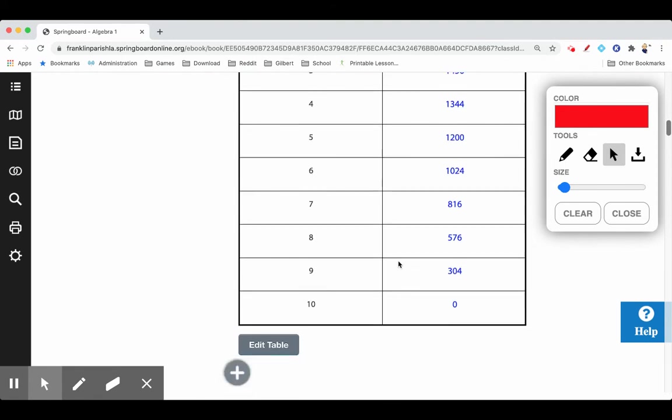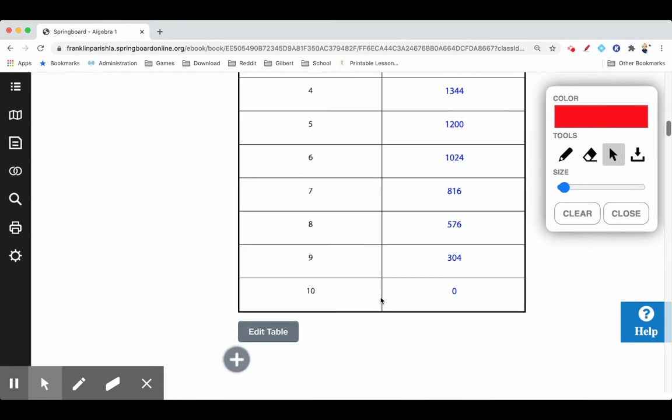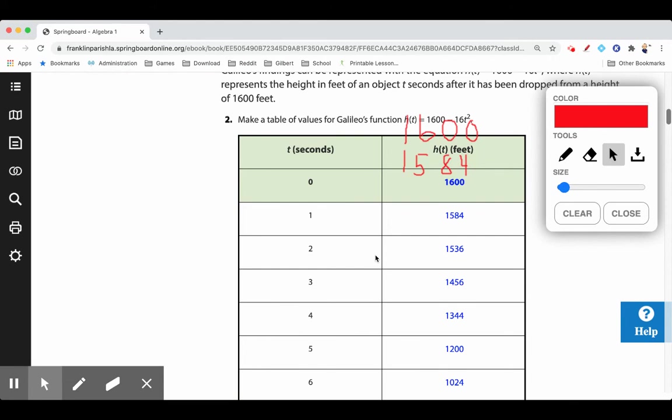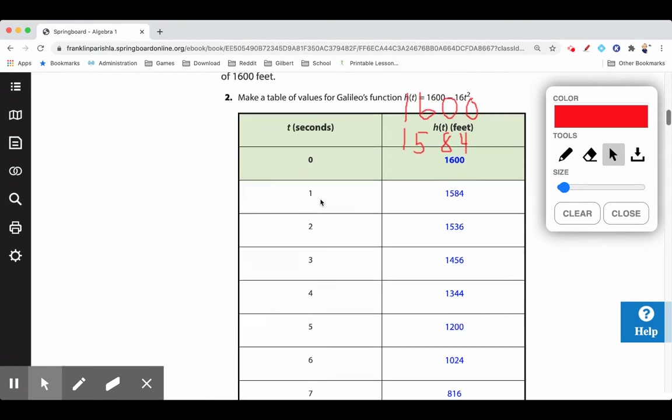So why do you think negative domain values are not appropriate in this situation? If you remember in lesson 6.3 we talked about reasonable domain. Why do you think negative domain values don't make any sense? Because we cannot go backwards in time. Zero is where he starts from. We can't say that at negative five seconds—he doesn't travel backwards in time. We only go forwards.